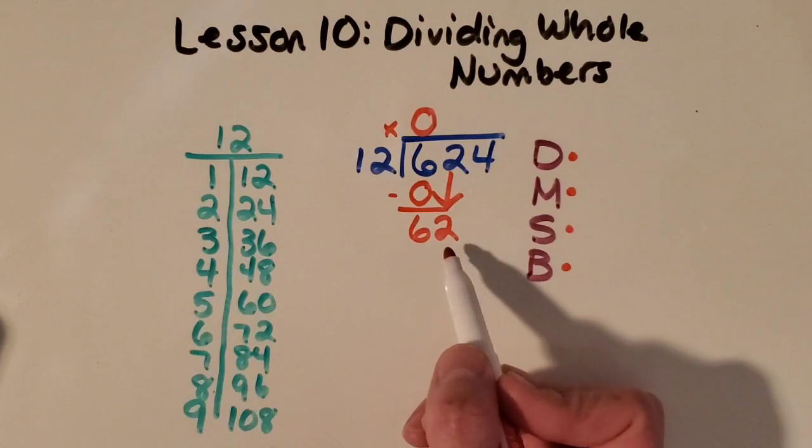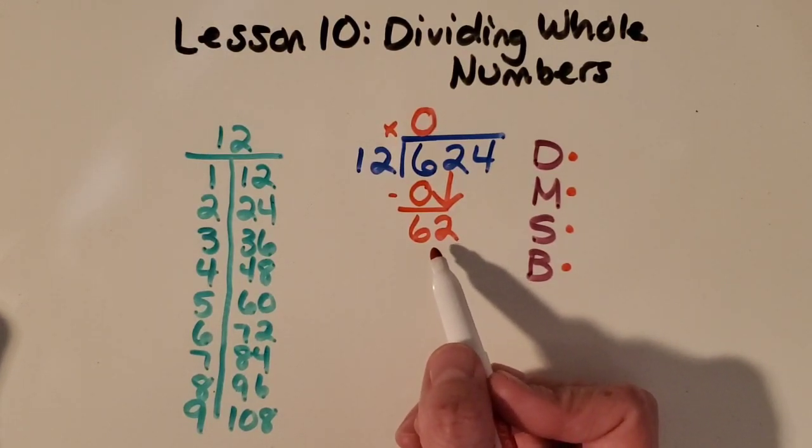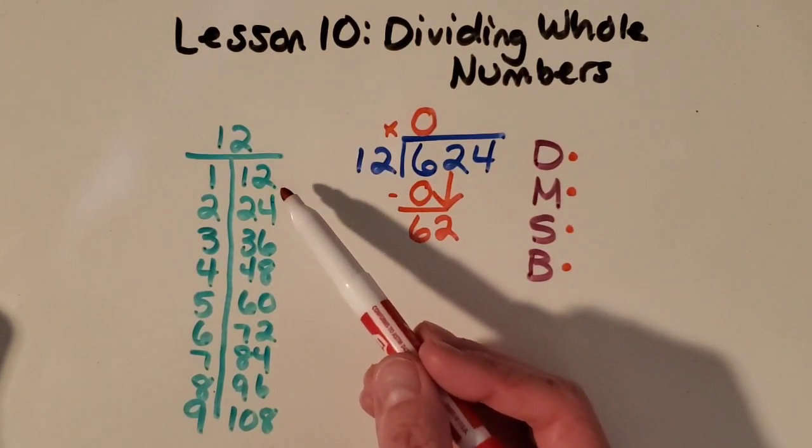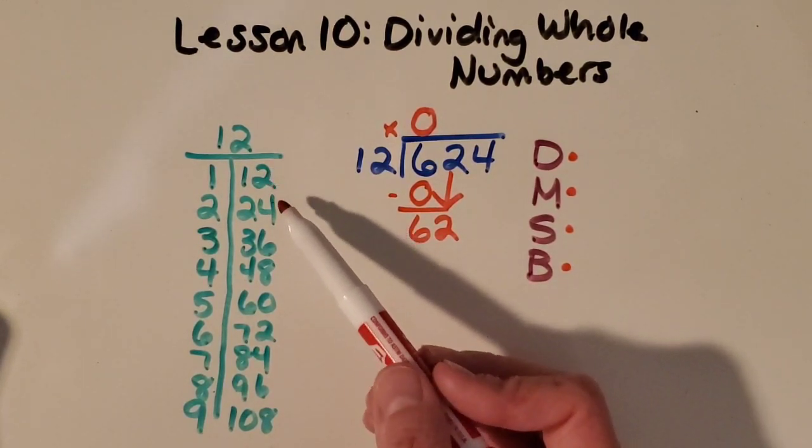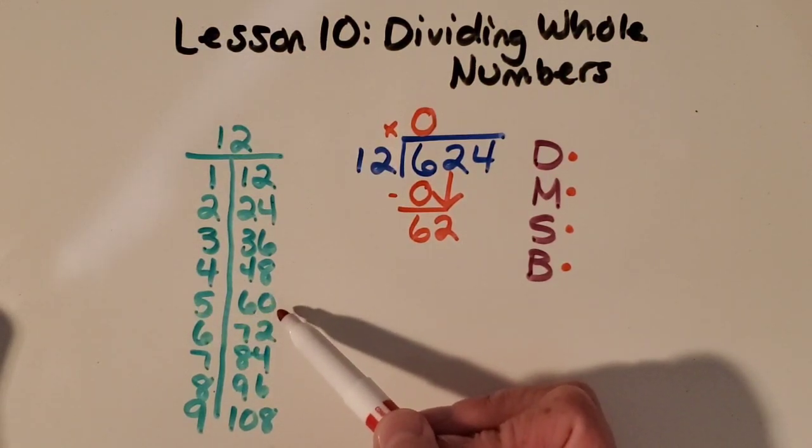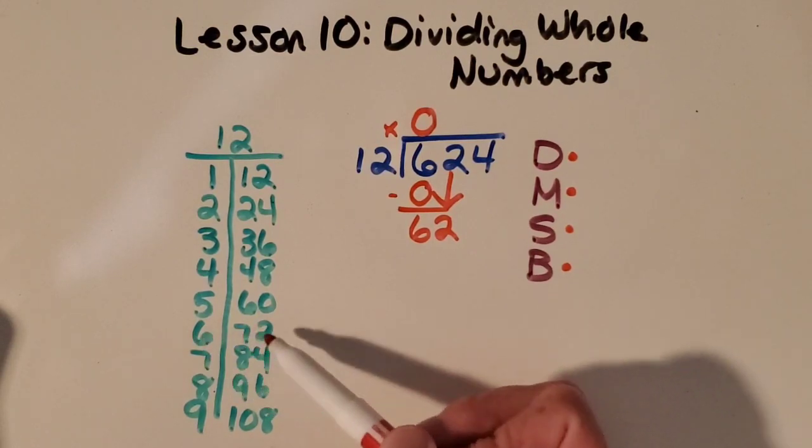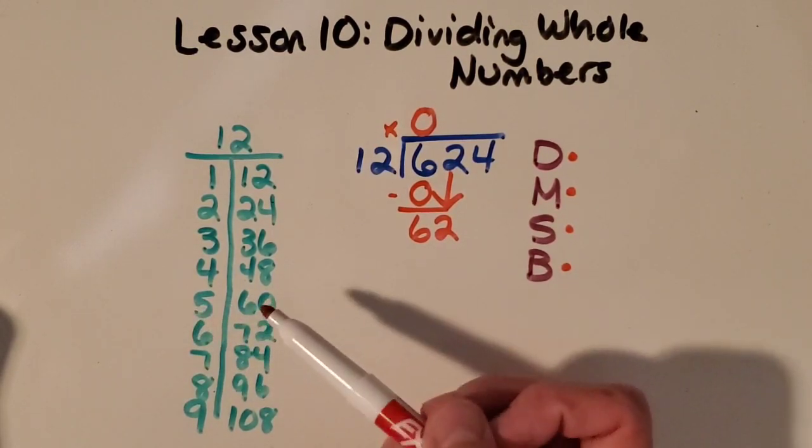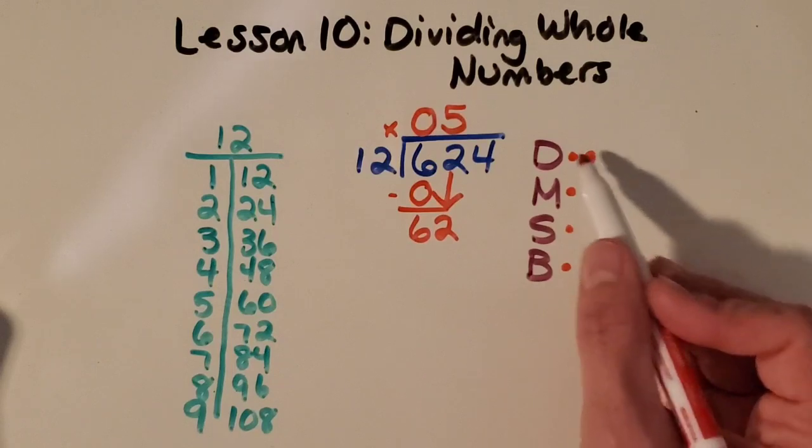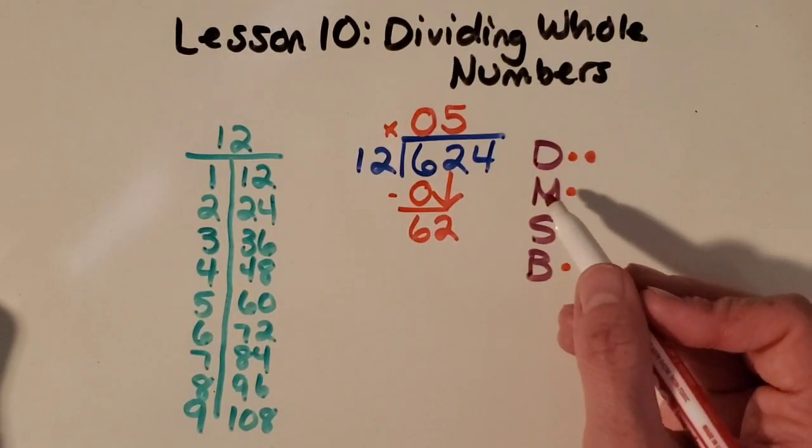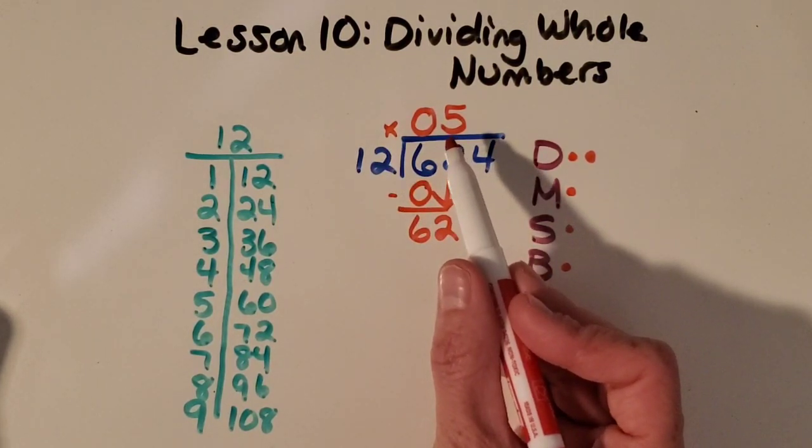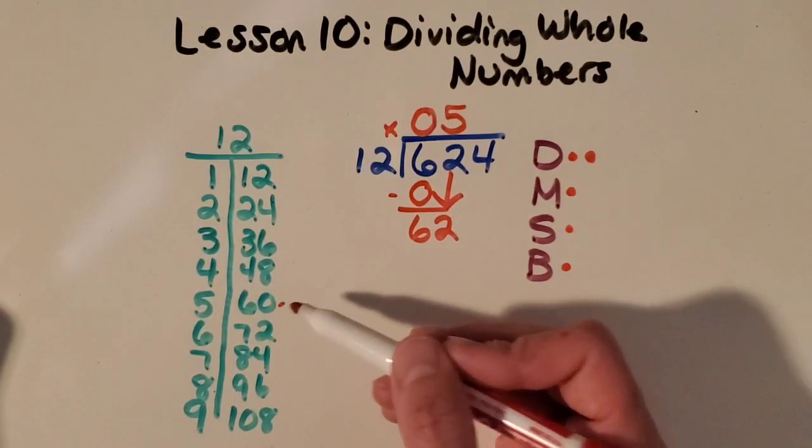So now I've got 62 to work with. I still want to be thinking about if I can make any groups of 12 with that. So let's take a look at our list. This is what comes in so handy—I can think, okay, I can make five groups of 12. I don't have enough to make six groups of 12, but I do have enough to make five groups of 12. So I'm going to put a five right here. I'm just going to continue the dots so I know I've done that a second time. And then multiply again. So 12 times that five I just wrote. And it's nice that I have this list because I can look it up. It's 60.